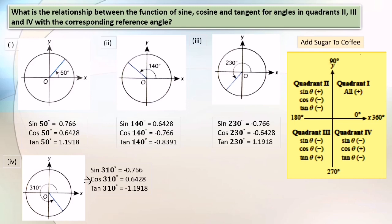In conclusion: first quadrant, all positive; second quadrant, sine theta positive; third quadrant, tangent theta positive; fourth quadrant, cosine theta positive. To memorize this, use the phrase 'Add Sugar To Coffee.' Add means all positive; Sugar — S is sine positive; To — T is tangent positive; Coffee — C is cosine positive.